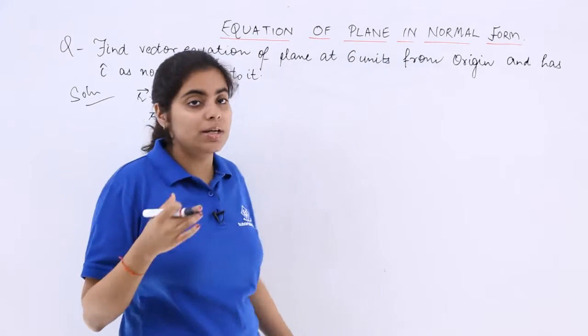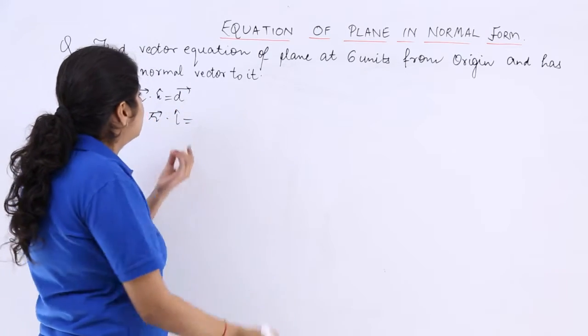n vector is a unit vector. What is the unit vector? It is i cap equal to d.